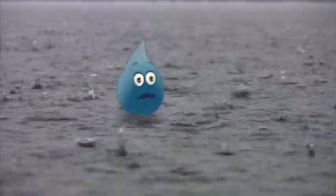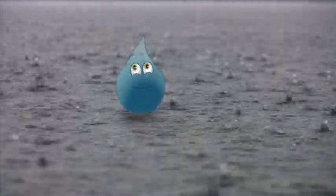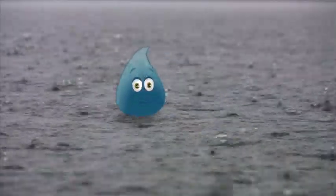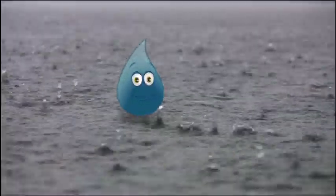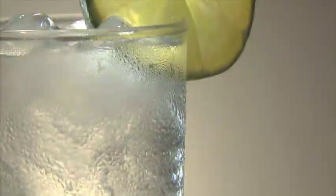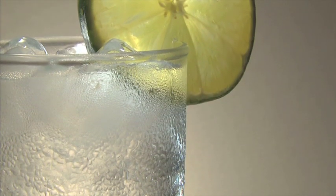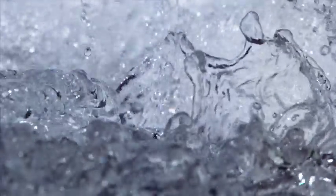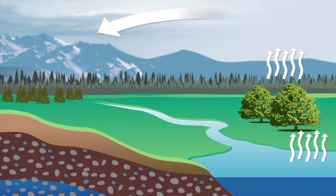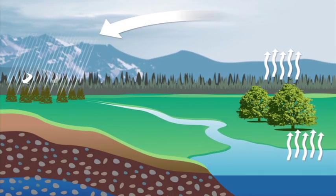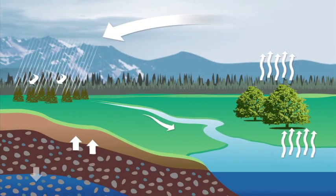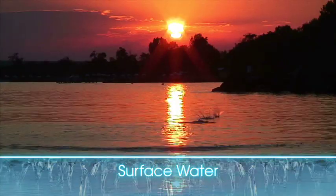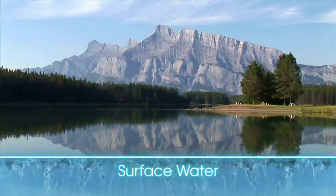Absolutely, I am a bit of a water expert — get it? "Spurt"? Water. Very funny, Splash. Hey, let's get down to business. Water is one of our most essential resources, but many people don't know where it comes from. The water cycle is the continuous movement of water on, above, and below the surface of the earth. Surface water is all of the water we see.